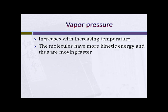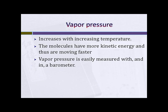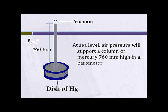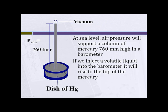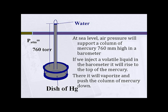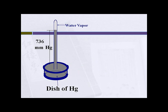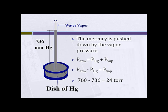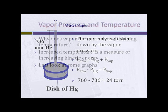Vapor pressure increases with increasing temperature, because molecules have more kinetic energy and thus move faster. Vapor pressure can be easily measured with a barometer. At sea level, air pressure supports a column of mercury 760 millimeters high. If we inject a volatile liquid — say water — into the barometer, it rises to the top of the mercury column and vaporizes, pushing the mercury column down. Since the total pressure supported is 760 mmHg, if the mercury column is at 736 mm, we know the vapor pressure of that water sample is 24 torr, or 24 millimeters of mercury.